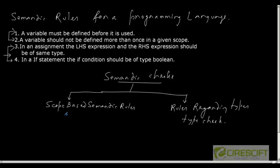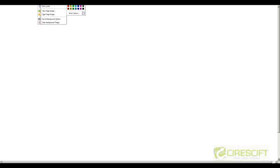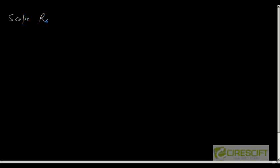We will study in this chapter how to perform these two kinds of semantic checks and how to design our data structures to store attribute values. To start with, let us begin with scope resolution. Today we will just start it and continue in the next class. Scope resolution is basically performed by a data structure called a symbol table.